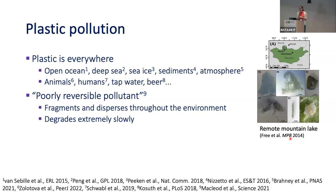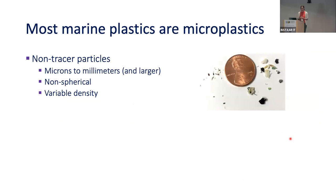We know plastic is accumulating in the environment in lots of places, and there's a lot of work on how it affects ecosystems and biology. But what I'm more interested in is its fate and transport once it's in the environment. I think a lot about plastic in the ocean and aquatic environments. Most plastics we find are what we consider microplastics — small particles from the microbe to millimeter scale — but people also consider larger plastic pieces.